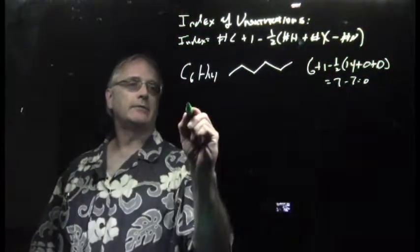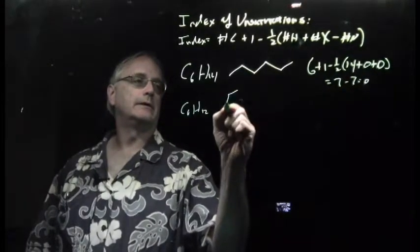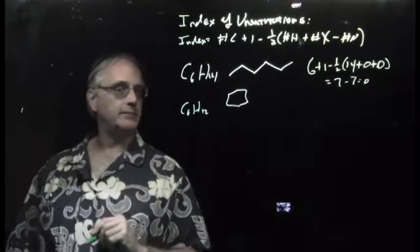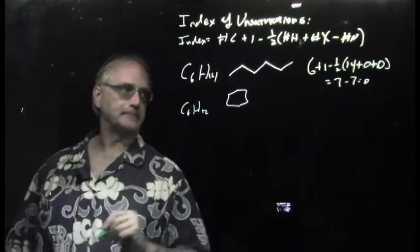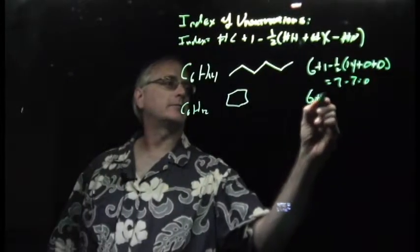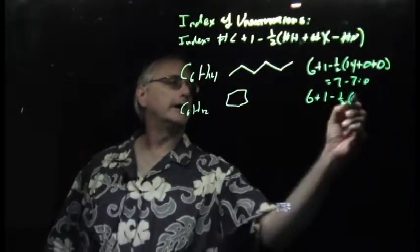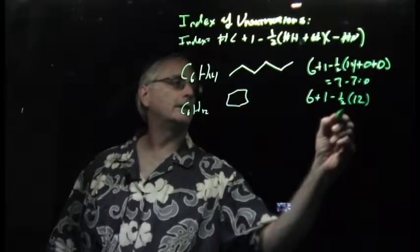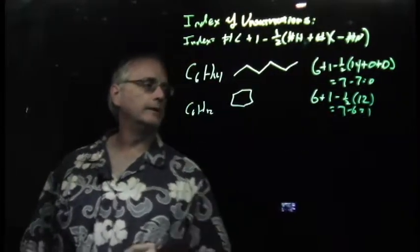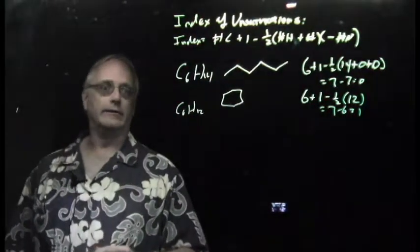If you have C6H12, that would be the formula of cyclohexane. Remember, that's not benzene, that's cyclohexane. You would have an index of unsaturations: again, six plus one, minus half the number of hydrogens, which in this case is 12. That's going to come out to be seven minus six, equals one. And there it is, one unsaturation.